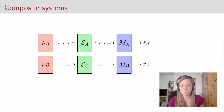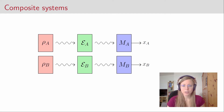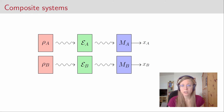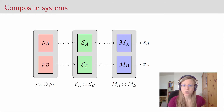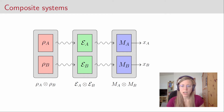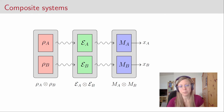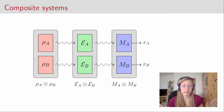Whatever happens in Bob's lab has no influence on what happens in Alice's lab. But of course we can still view this as one system where two individual quantum experiments take place. In this case we describe the situation with tensor products: the composite state is rho_A tensor rho_B, the quantum channel is E_A tensor E_B, and the measurement is M_A tensor M_B. This is a very simple way of getting a composite system — you just take two completely independent quantum experiments and view them as one system.